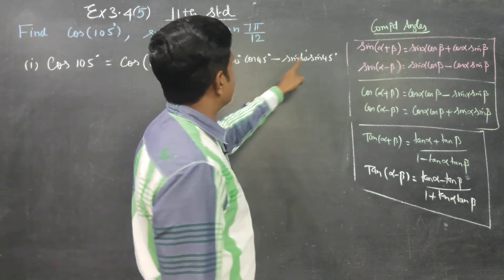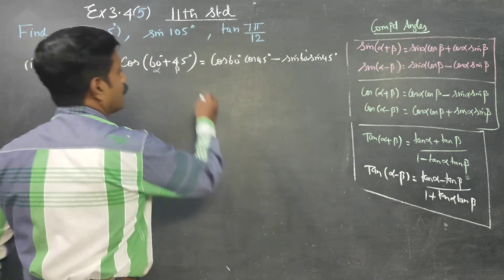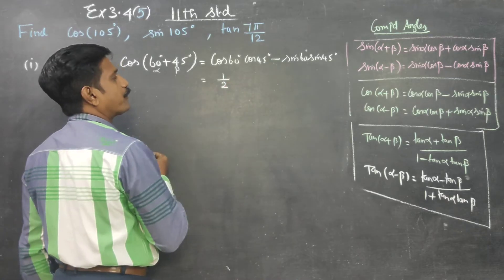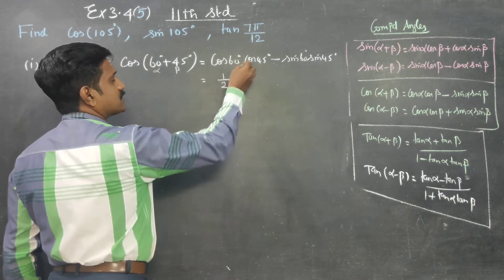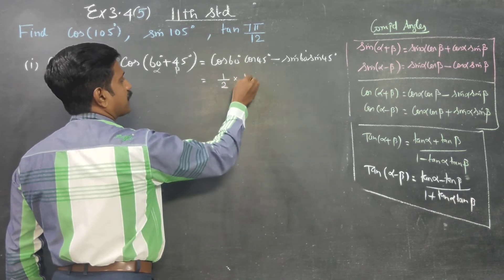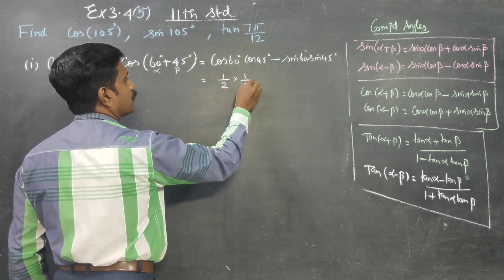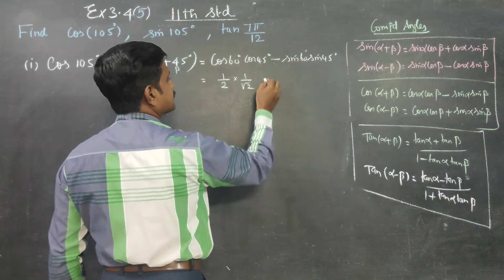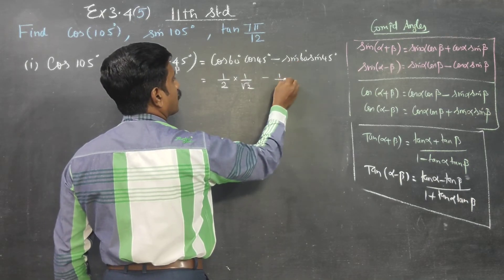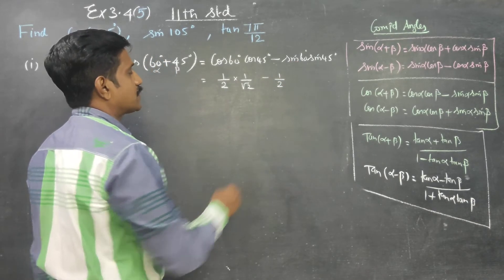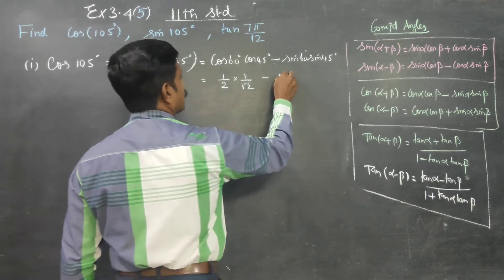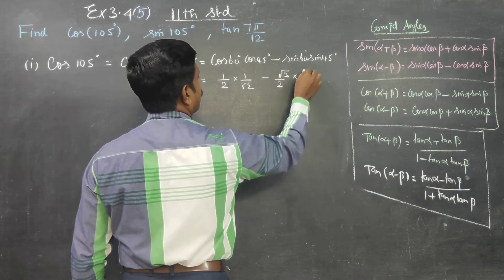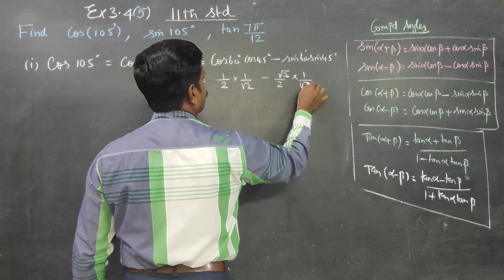So we have: cos60, cos45, sin60, sin45. What is cos 60? It is 1/2. What is cos 45? 1/√2. What is sin 60? — sorry — it is √3/2. And sin 45 is 1/√2.